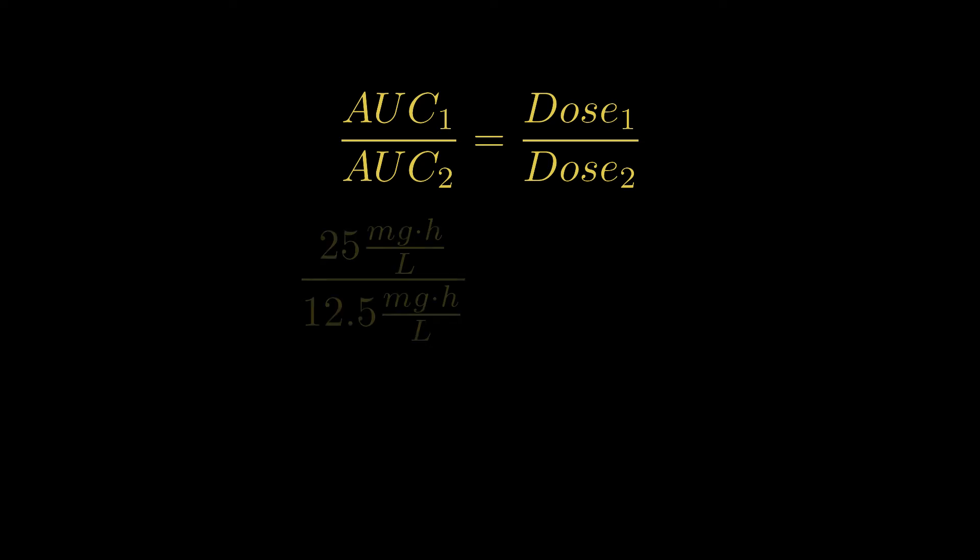Now to fill in our formula, we will do the given AUC of 25 mg hour per liter divided by our target AUC of 12.5 mg hour per liter is equal to our initial dose of 100 mg divided by our target dose or dose 2.